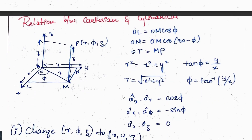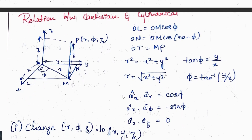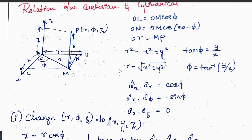Next is the relationship between Cartesian and cylindrical coordinates. Consider an xyz plane with point P having vectors r, φ, z and coordinates x, y, z. From geometry: OL = OM·cosφ, and r² = x² + y². Therefore r = √(x² + y²), and tanφ = y/x, so φ = tan⁻¹(y/x).